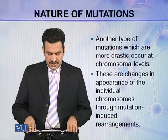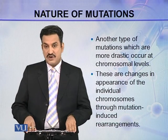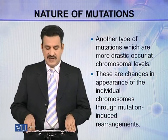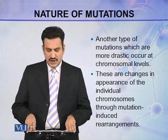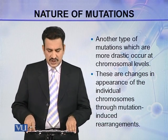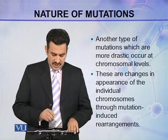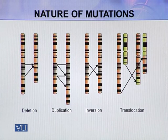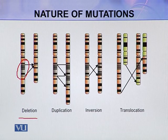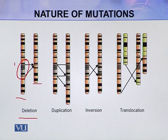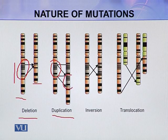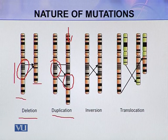Another type of mutation, which is more drastic, occurs at the chromosomal level. These are changes in the appearance of individual chromosomes through mutation-induced rearrangements. There are many examples, such as deletions, where a region is totally deleted from the chromosome so the mutated chromosome lacks that portion. In case of duplication, a portion is duplicated, so the mutated chromosome has a double copy of that particular sequence.